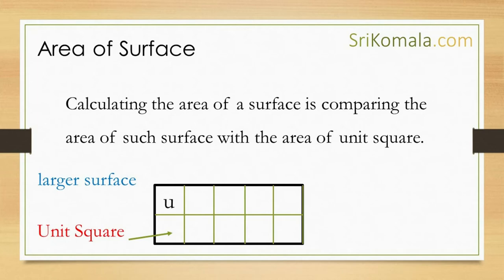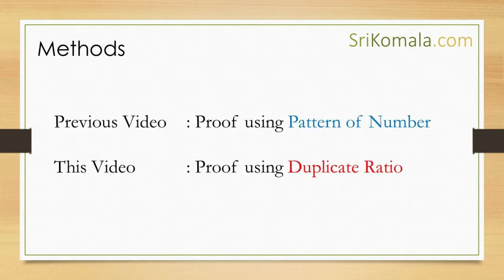Having understood that, let us prove the area of a square. In a previous video, we discussed the proof using the pattern of numbers, which is the simplest way to prove the area of a square. If you are interested, please find the link to the previous video somewhere on the monitor or in the description below. In this video, we are going to discuss the proof using the duplicate ratio. The question is, what the duplicate ratio is — this will be discussed in the following slide.